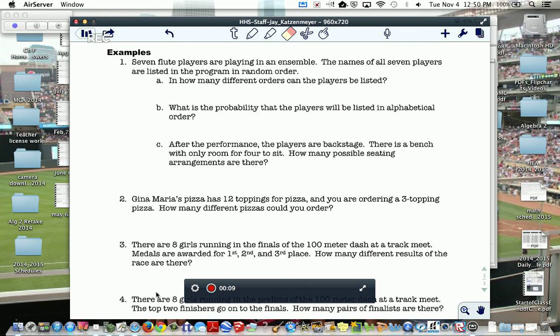If we have seven flute players in an ensemble, the names of all seven players are listed in the program in random order, and how many different orders can the players be listed? So, that would be the order matters. I can tell the difference between who's listed first or not. So, if you want to pause, do that now.